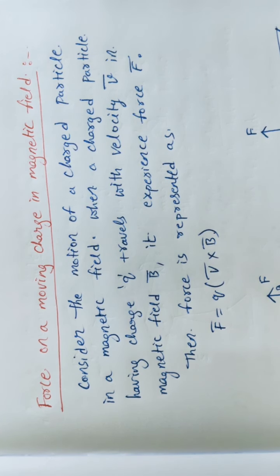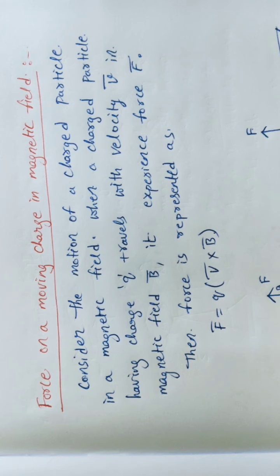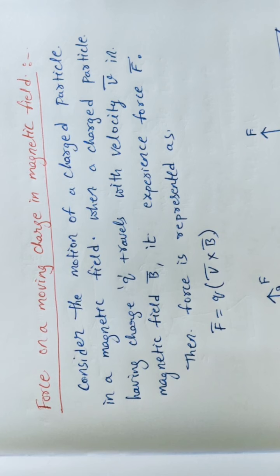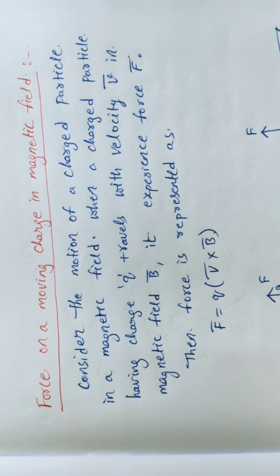If a particle having charge Q is moving with certain velocity V in a given magnetic field strength B, then a force is compulsorily developed on it. We represent that force as F̄ = Q(V̄ × B̄). This is in vector form, where between V̄ and B̄ we use the vector cross product.